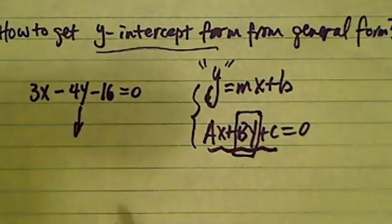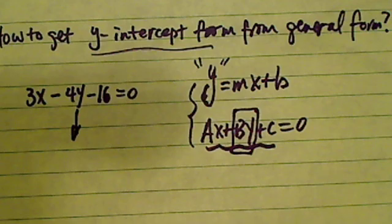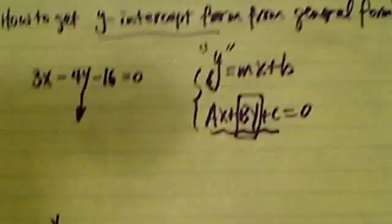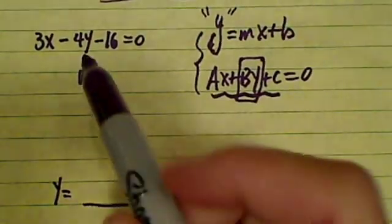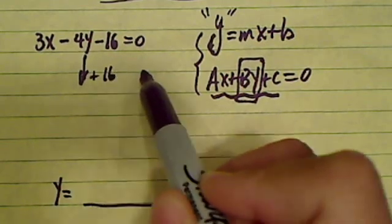So let's take a look at this example. I want y by itself so my end goal is y equals something. So I'm going to do all the steps possible to move everything else away. I'm going to plus 16 on both sides.